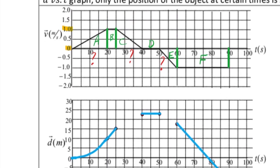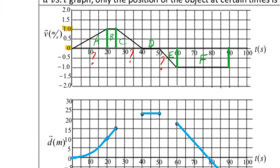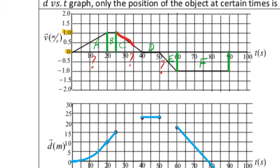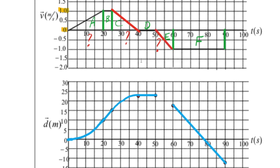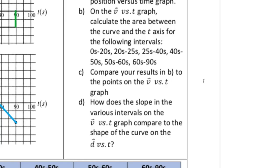To complete the sketch: section C, from 25 to 40 seconds, has negative acceleration, so it's a downward-facing parabola — a frowny bit. Section E is also negative acceleration, so it's also a frowny bit on the graph. It's a bit tricky to draw by hand, but you get the idea.